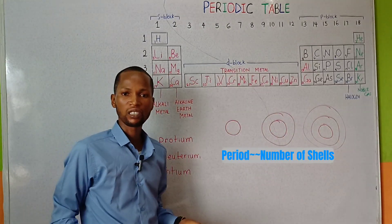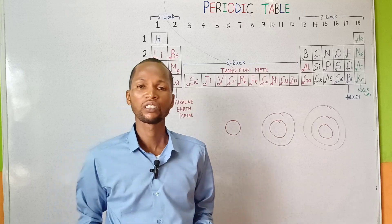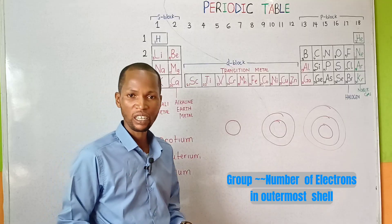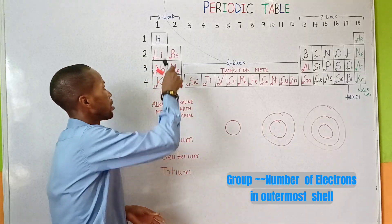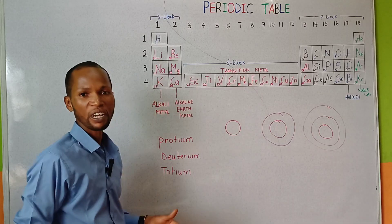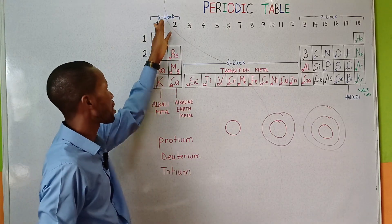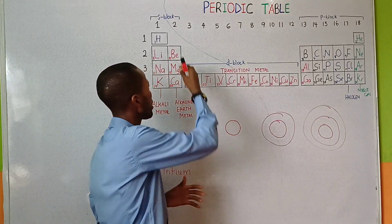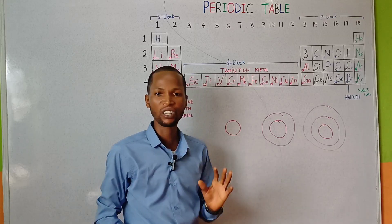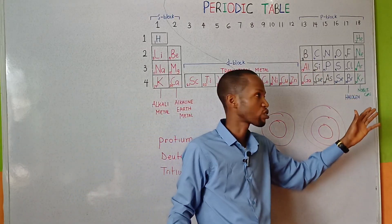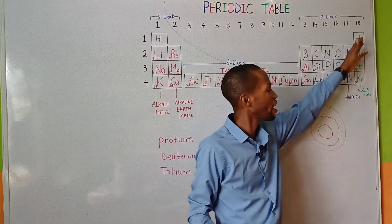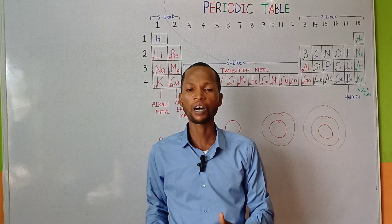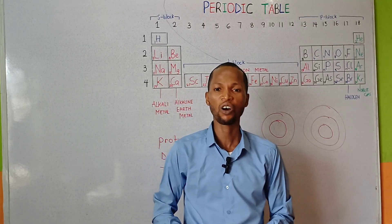The period tells the number of shells, while the group tells the number of electrons in the outermost shell of an atom. Elements in group 1 will have just one electron in its outermost shell. Elements in group 2 will contain just two electrons in their outermost shell, group 3 — three electrons. Also elements in group 8 or 0 contain eight electrons in the outermost shell. So the group tells the number of electrons in the outermost shell of an atom.